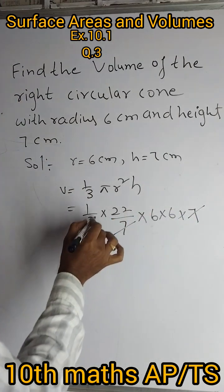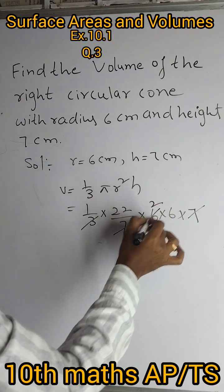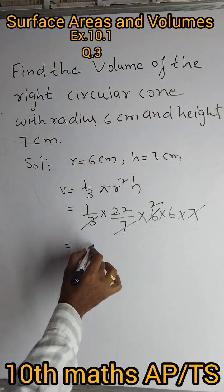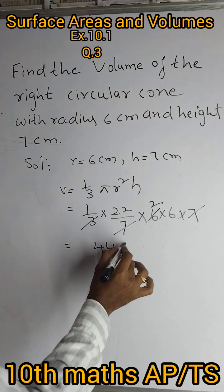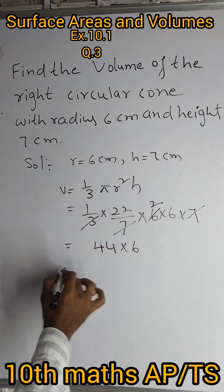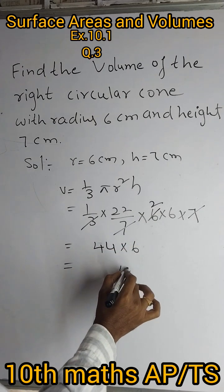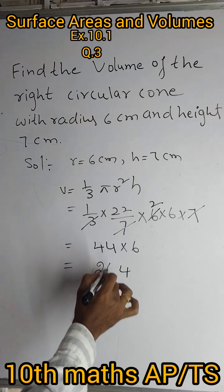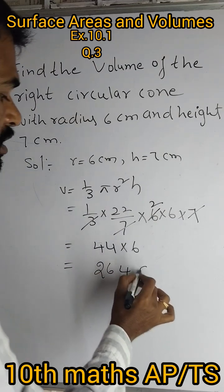This 7, this 7 is cancelled. 3, 2 times 6. 22, multiplication 2 is 44. 44 multiply with 6 is 264 cubic cm.